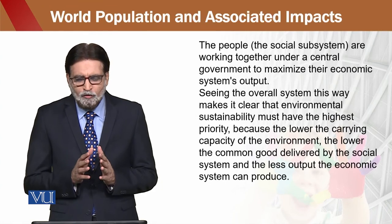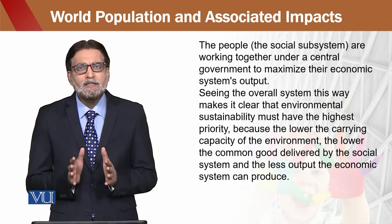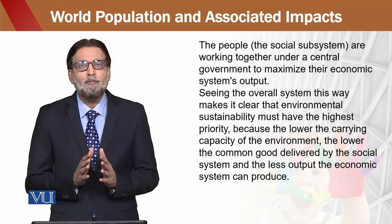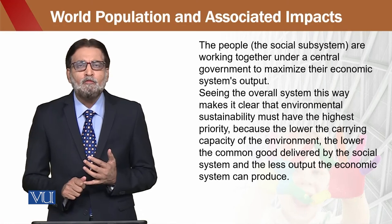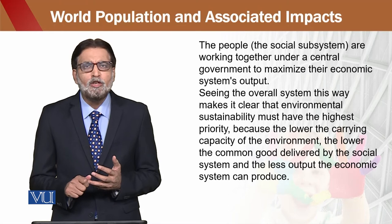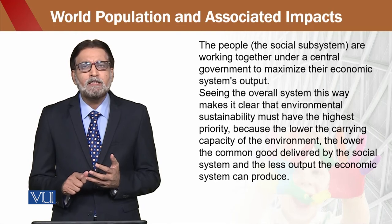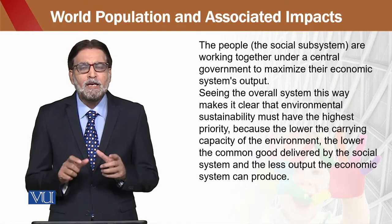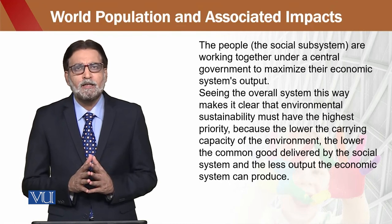और उस बोझ को कम करने के बाद, हमारा जो अगला factor आएगा, वो हमारे पास है economic. हमने जो funds allocate की हैं, जो हमारी economic planning है, और जो funds allocation हमने की है, उसकी appropriateness. उसके अंदर दो चीज़ें involved हैं: पहली चीज़ है population growth का rate, और दूसरी चीज़ है socialization — यानी tribal areas की तरफ से urban areas की तरफ movement. जब हम economically resources allocate करते हैं, तो वो भी upside हो जाते हैं.